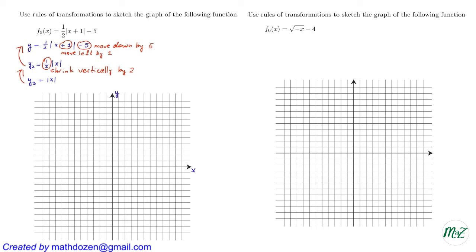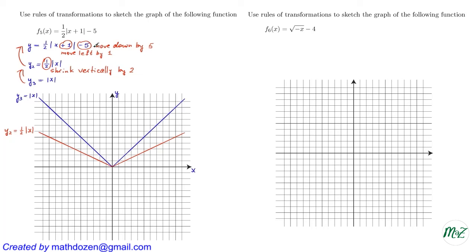Graphing y3 = |x| gives the blue V-shaped graph. We then shrink it vertically by a factor of 2, dividing every y-coordinate by 2 — for example, the point at height 2 moves to height 1. This gives the red graph, y2 = ½|x|. Then moving the red graph left by 1 unit and down by 5 units gives the green graph of the original function: ½|x + 1| - 5.